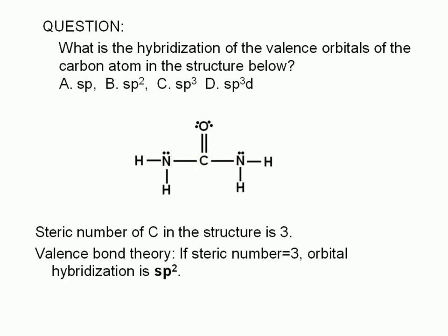Valence bond theory accounts for bonding between two atoms in terms of overlapping atomic orbitals.